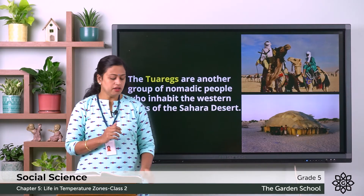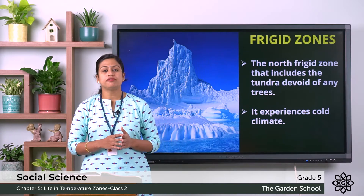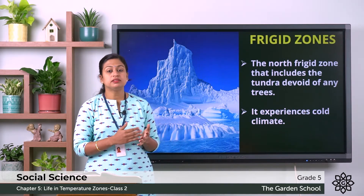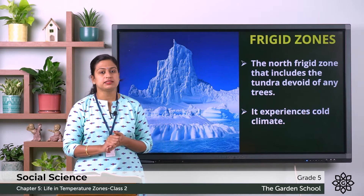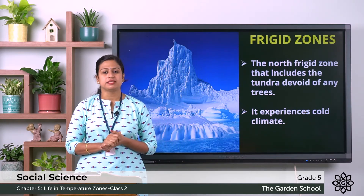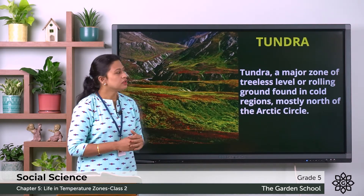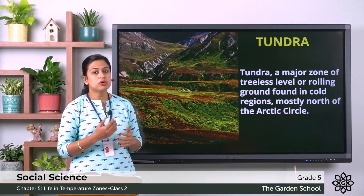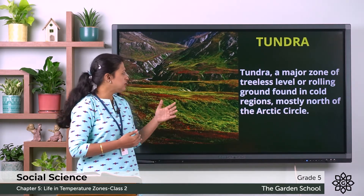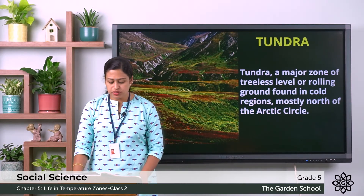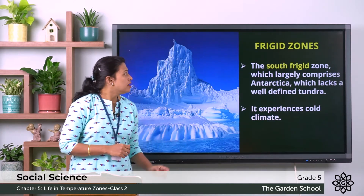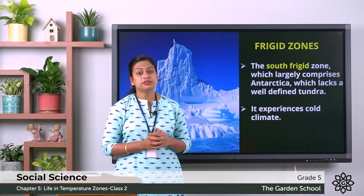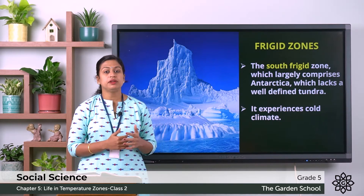Next we will discuss about the frigid zones. This zone consists of two zones: the North Frigid zone and the South Frigid zone. The North Frigid zone includes the Tundra region, which is a treeless area that experiences cold climate. Tundra is a major zone of treeless level or rolling ground found in cold regions, mostly north of the Arctic Circle. The South Frigid zone largely comprises Antarctica, without the Tundra region, and this zone also experiences very cold climate.